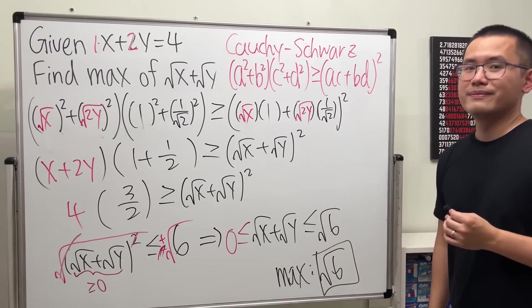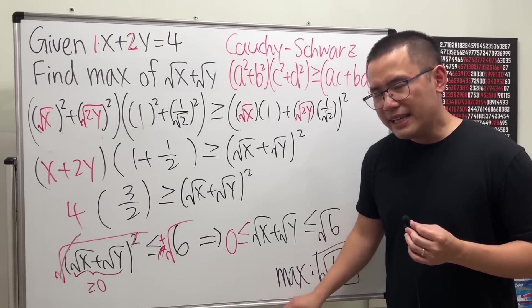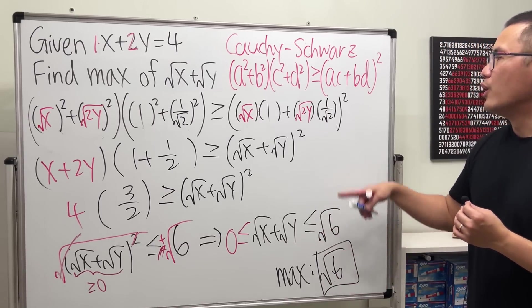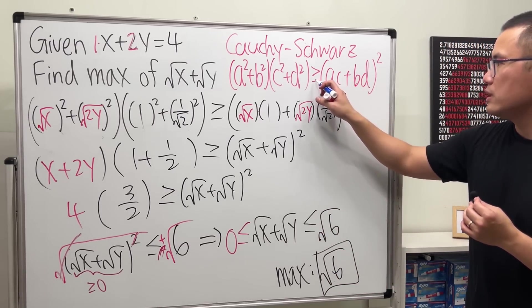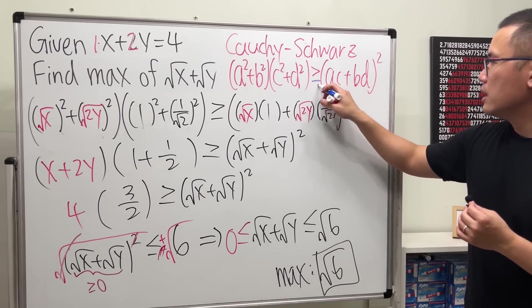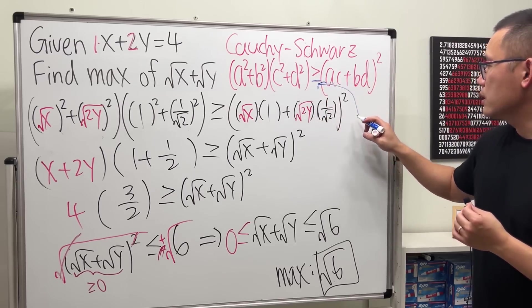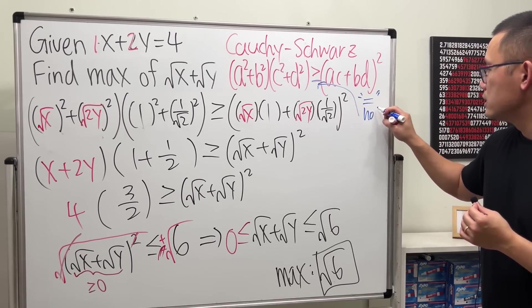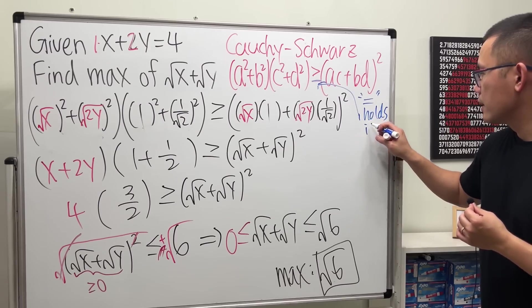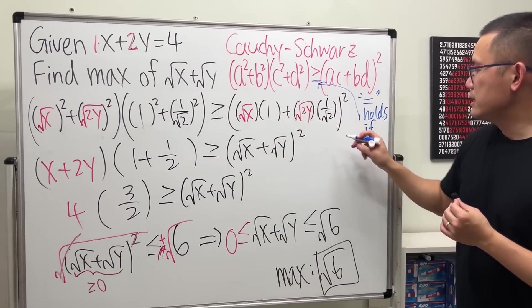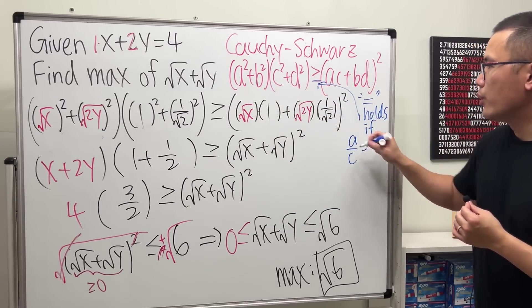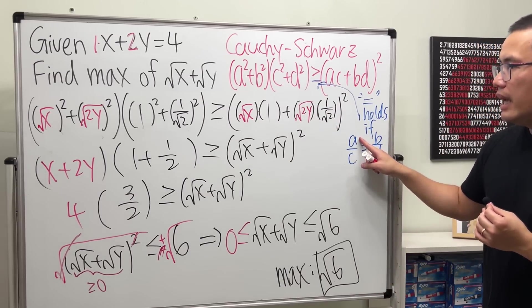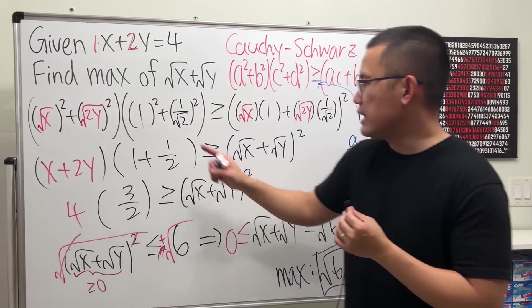And we're done. But you might be wondering, for what x and y will help us achieve this right here. Now, we will have to come back to the Cauchy-Schwarz inequality and talk about the equality. The equality will work. So, I will just say the equality holds if a over c is equal to b over d. So, that means what? a is this and c is that, right?